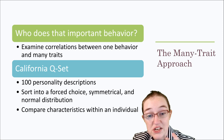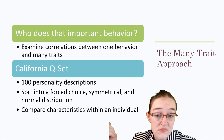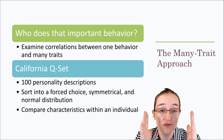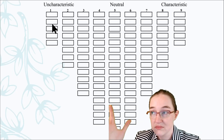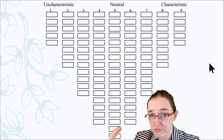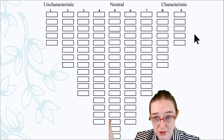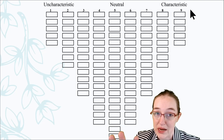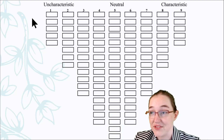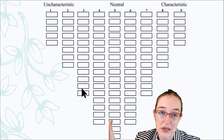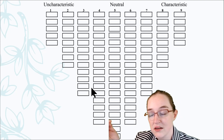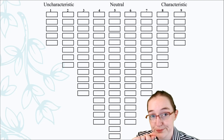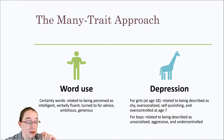You place all phrases into the distribution — you're only allowed five that are super characteristic of you and five that are super uncharacteristic. Most fall in the middle where you think 'I guess, kind of.' It forces you to choose, which is why it's called a forced-choice distribution.